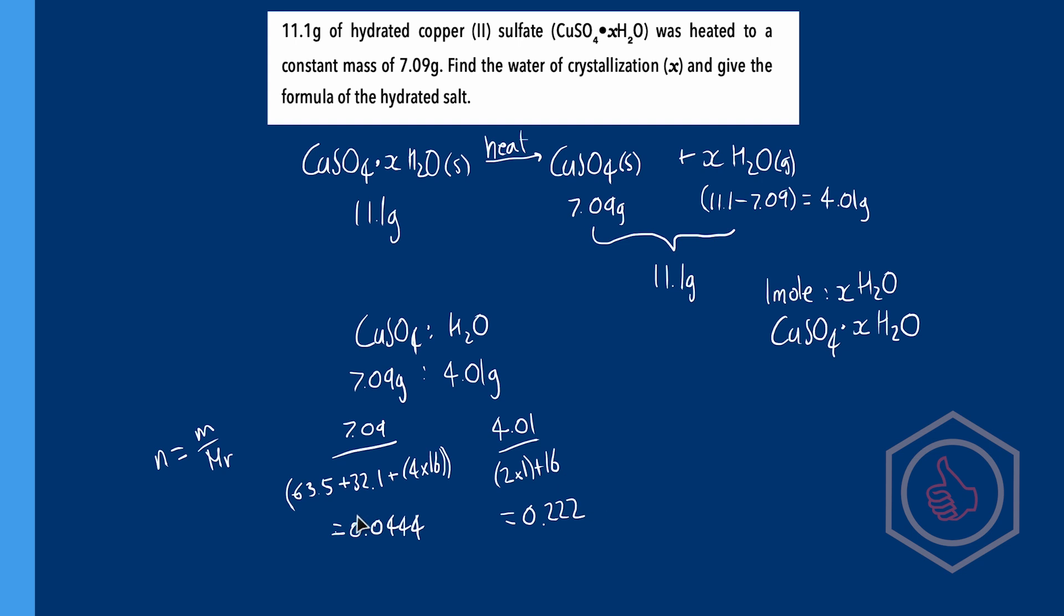Great, this means we now have a molar ratio. 0.0444 moles of copper sulfate to 0.222 moles of H2O. The only problem is we need to convert this into a 1 to x ratio meaning how many moles of water for one mole of copper sulfate.